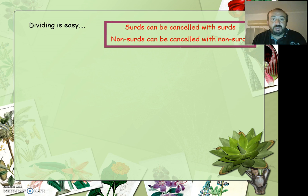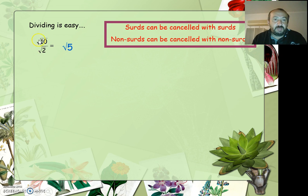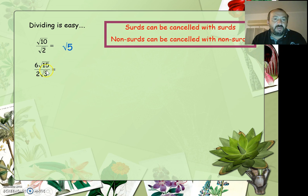For dividing: surds can be cancelled with surds, and non-surds can be cancelled with non-surds. So root 10 over root 2 is the same as root 5, because they're both under a square root sign and we can just cancel the 10 with the 2. For 6 root 15 divided by 2 root 3: the 6 and the 2 we can cancel to give 3, because they're non-surds. Then 15 divided by 3 is 5, so this is going to be 3 root 5. The 3 comes from 6 divided by 2, and the root 5 comes from root 15 divided by root 3.